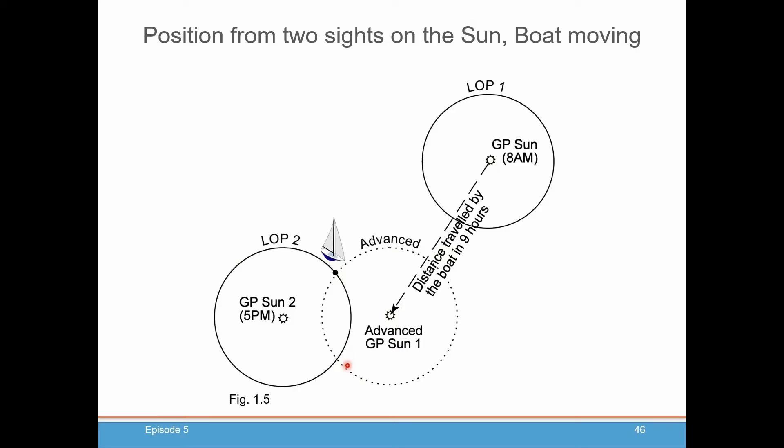In fact, in our next episode, we're going to work a very simple example using the Nautical Almanac to determine GPs, and we'll specify some sextant sights based on those GPs, and we'll see if we can figure out where we are taking those sights from. So I'm looking forward to that, and hopefully you are too. Thank you very much.